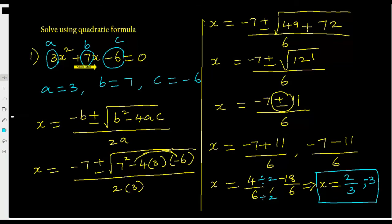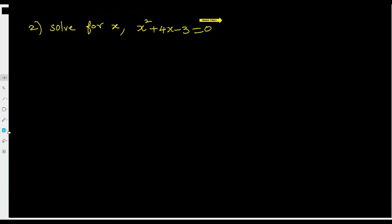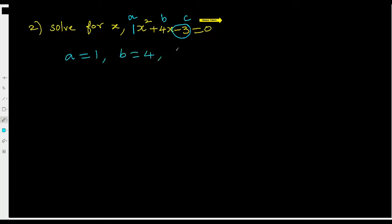Now let's do one more question: solve for x, x squared plus 4x minus 3 equals 0. Whenever there is no number in front of a variable — that is, no coefficient — we always take it as 1. So a equals 1, b equals 4, and c equals negative 3. Write the quadratic formula: x equals negative b plus or minus the square root of b squared minus 4ac, divided by 2a.